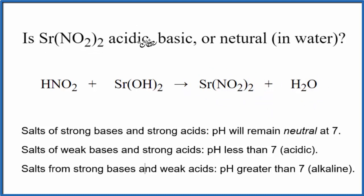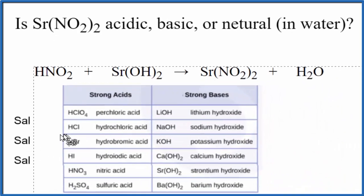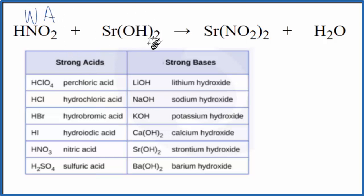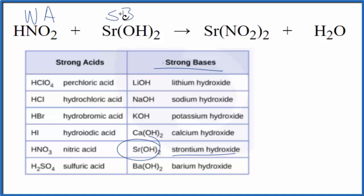To figure out whether Sr(NO₂)₂ is acidic, basic, or neutral, we need to know the strength of the acid and the base. Using a table of common strong acids and bases, we look for HNO₂. We find HNO₃ but not HNO₂, so it's not a strong acid — call it a weak acid. Strontium hydroxide is on the list, so it is a strong base.